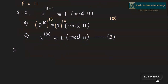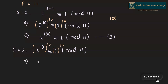When a equals 3, we have 3 to the power of 10 is congruent to 1 mod 11. Taking both sides to the power of 10 gives 3 to the power of 100 is congruent to 1 mod 11. This is our second equation.